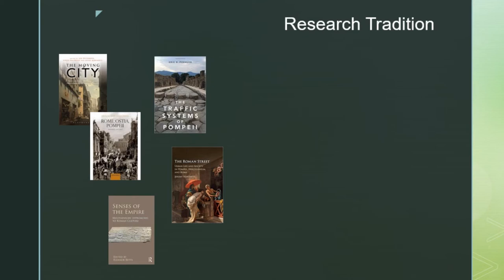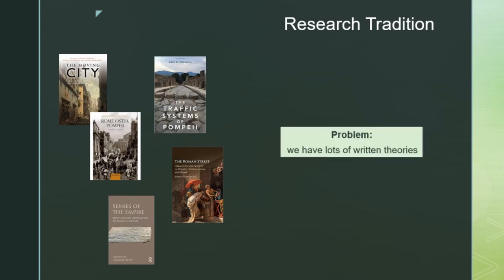We have a continuing tradition — especially the past couple of years — of questioning mobility in ancient street systems. There are books on processional movement, cart movement, different types of interactions along a Roman street, even looking at how different senses promoted mobility in Roman cities. But the issue is that all of these are written theories; most have not been transitioned into how can we actually apply and study this within an ancient street network using the archaeological evidence we have.